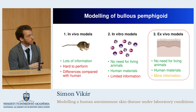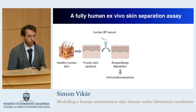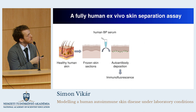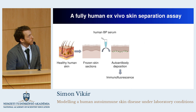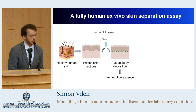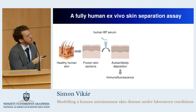So our first aim was to establish an ex vivo model to investigate this autoimmune skin disease in our lab. We wanted to model the most characteristic feature of the disease, which is the separation between the epidermis and the dermis. To do that, we worked together with the dermatology department of Semmelweis University, from where we received healthy human skin tissues. From this tissue, we produced really thin five-micrometer frozen skin sections. We also received the serum of bullous pemphigoid patients — patients who have this autoimmune skin disease — which contained the pathogenic autoantibodies against the skin proteins. So we treated the tissues with this serum.